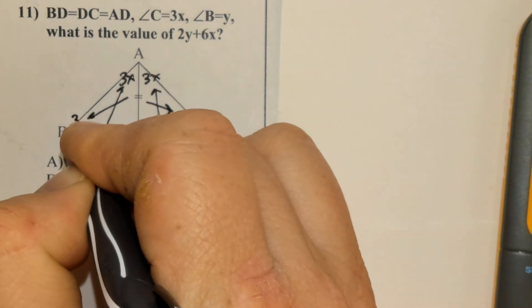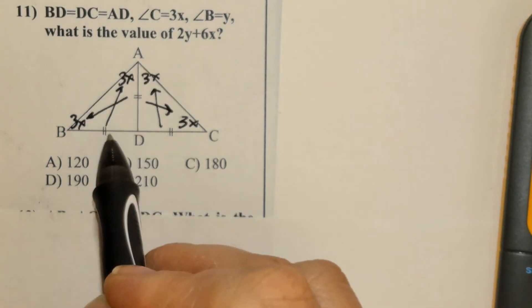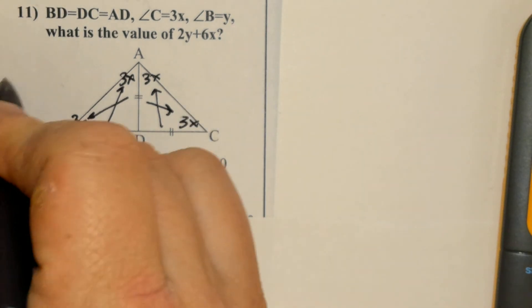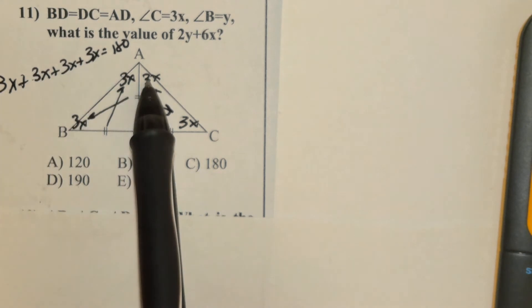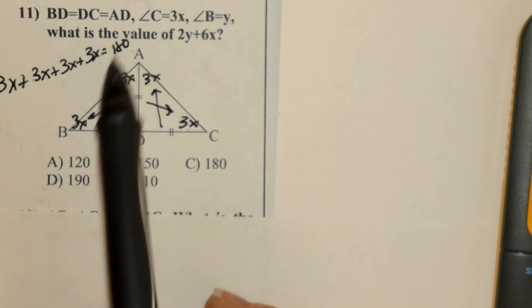And the opposite of this side is also 3x. So the interior angles of this triangle would be 3x plus 3x plus 3x equals 180.